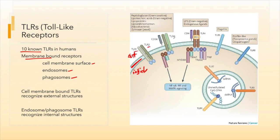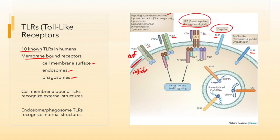The cell membrane-bound TLRs — TLRs 1, 2, 4, 5, 6, and 11 — all recognize components of bacteria that are found on the outside of bacterial cells: flagellin, LPS, peptidoglycan in gram-positives, lipoteichoic acids, and lipoproteins. These are all structures and molecules found on the surface of bacterial cells.